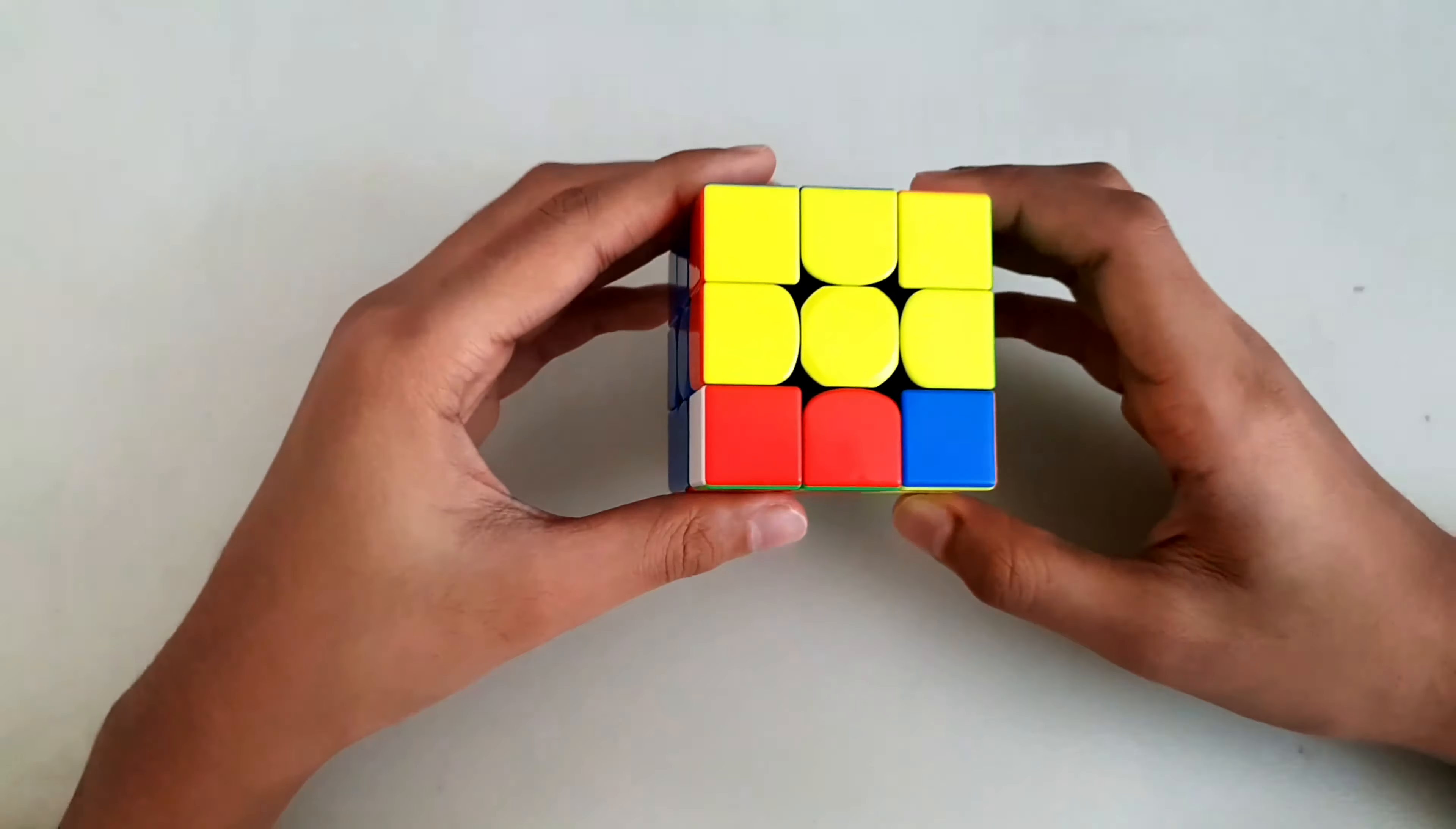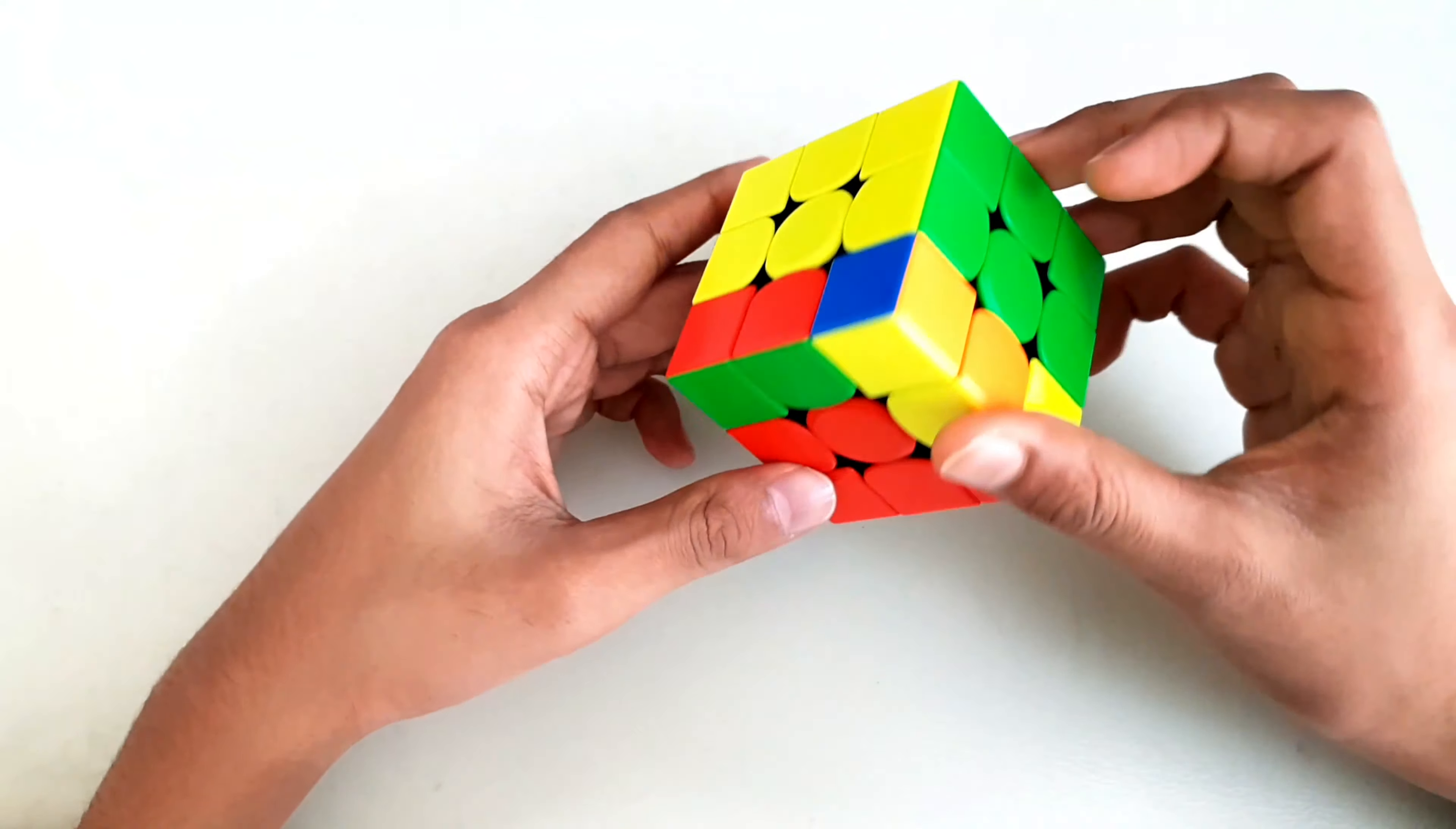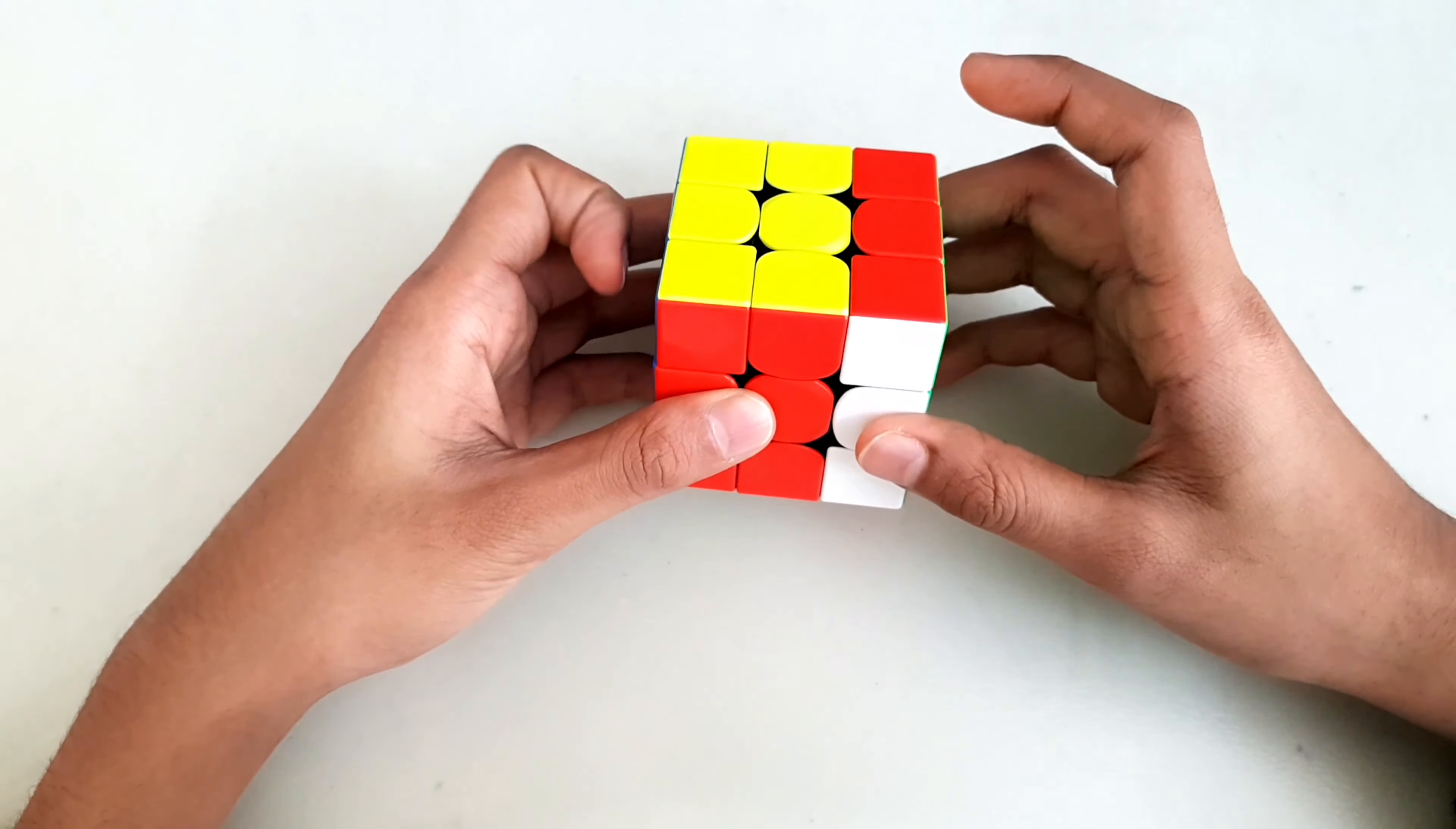Moving on to the second case. You have the first two layers of the yellow done. You have the F2L pair and the other corner is facing U. What you're going to do is a simple R U' R'.